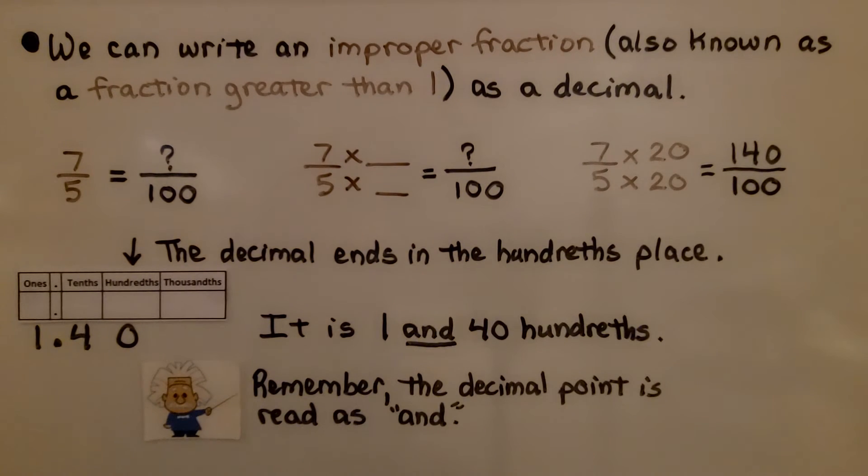Since the decimal ends in the hundredths place, we have hundredths, that means we're going to have 1.40 with the zero in the hundredths place. It's 1 and 40 hundredths. So, remember the decimal point is read as AND when we read this. We have 1 and 40 hundredths.